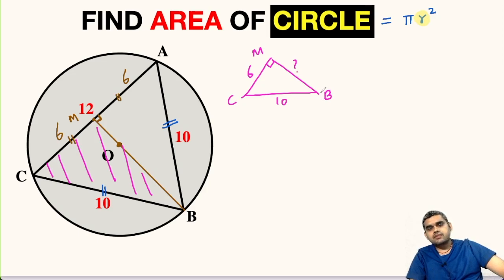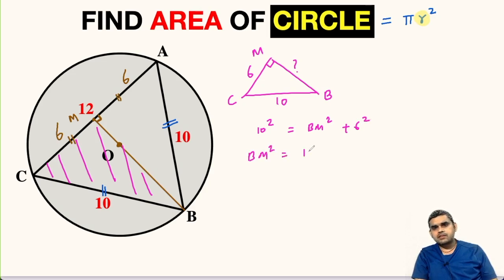Using Pythagorean theorem, we can find the value of BM. So we will get 10² = BM² + 6². So BM² will be equal to 100 - 36, that is 64. So BM will be √64, that is 8. So this entire length is 8 units.